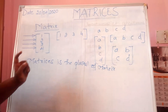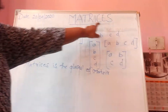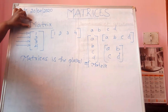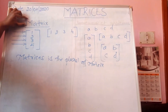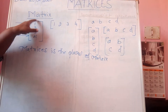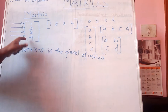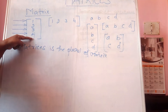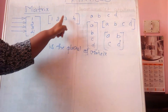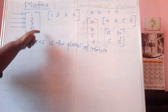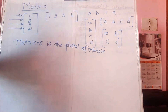Children, today we are going to learn about matrices. First of all, you should know what is a matrix. A matrix is an arrangement of any number or any entity in the form of a rectangle. We are arranging it in the form of a rectangle: 1, 2, 3, 4. Arrangement of numbers in the form of a rectangle is called a matrix.